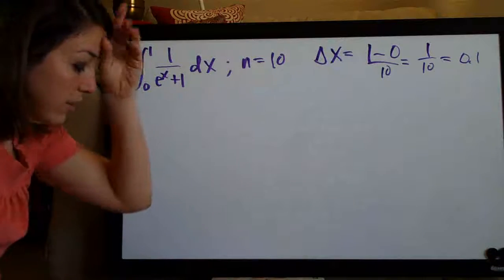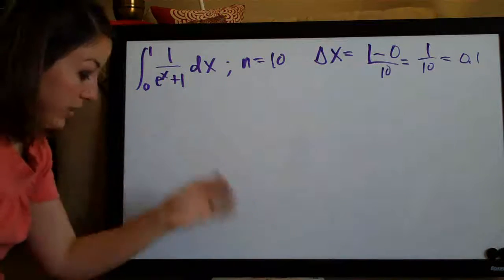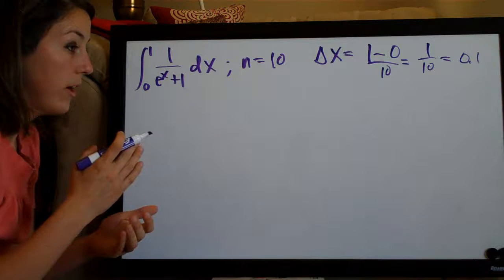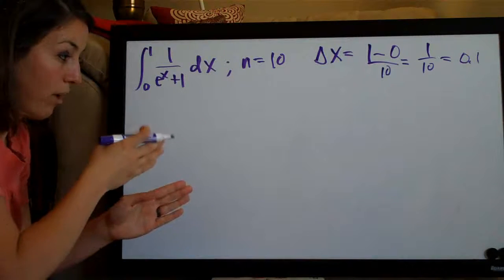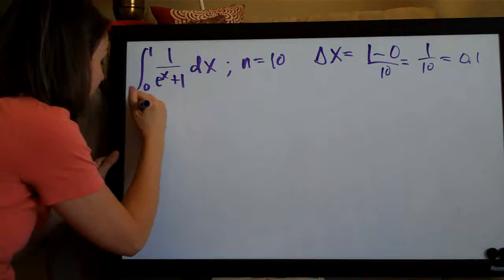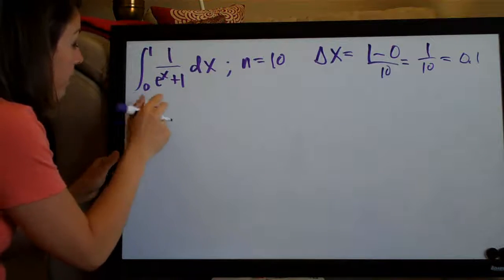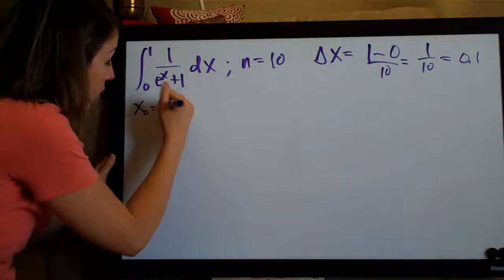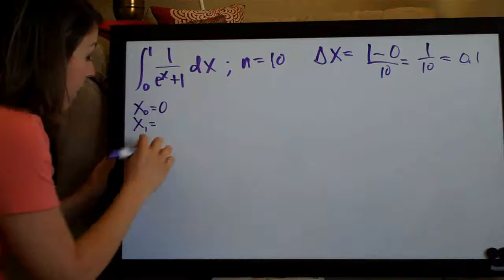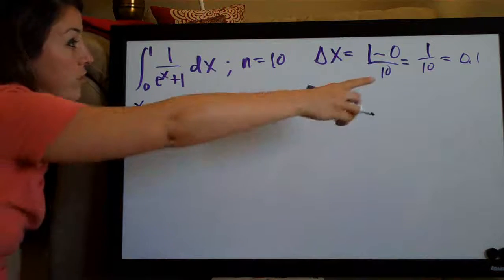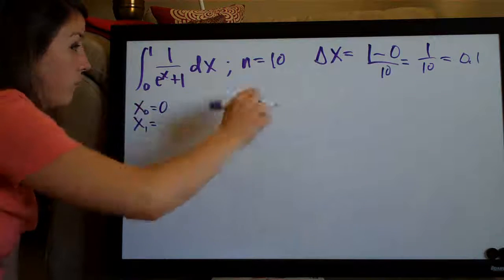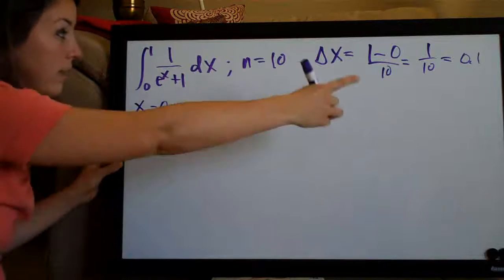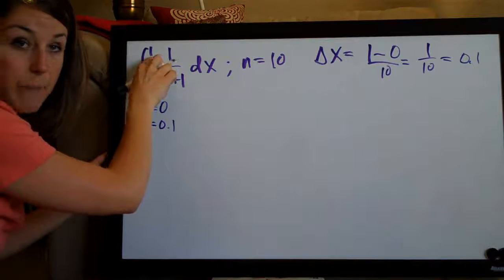So once we find delta x, which is really simple to do, the next thing we want to go ahead and do is write down the areas where the trapezoids begin and end. So we write down x zero. x zero is always the bottom number here or the left hand side of the range. So x zero is zero, x one, then we just start adding delta x each time. So zero plus point one is zero point one.